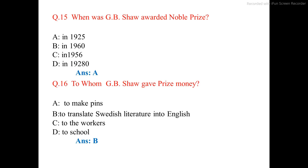Question number 15. When was J.B. Shaw awarded the Nobel Prize? The correct answer is option A: in 1925.